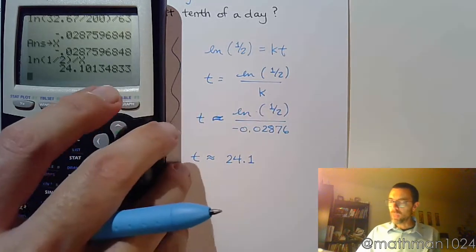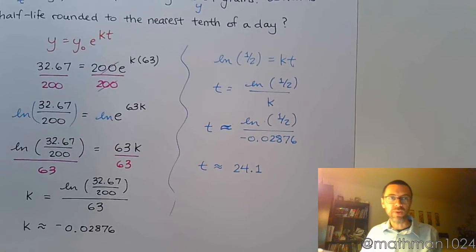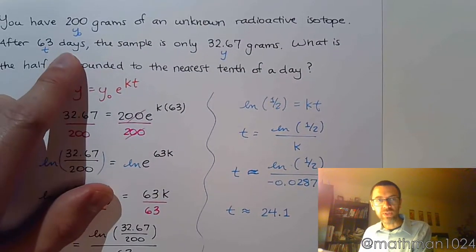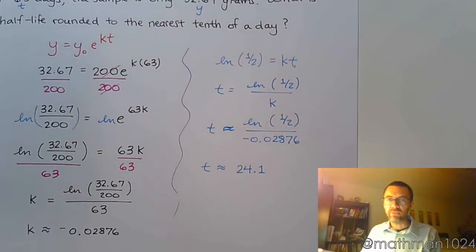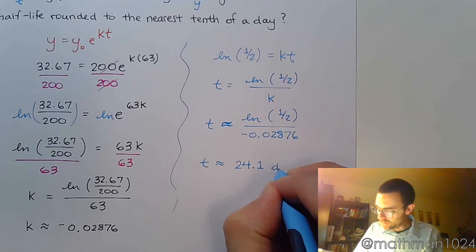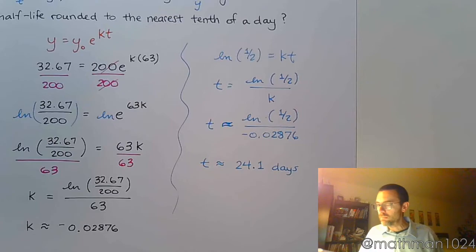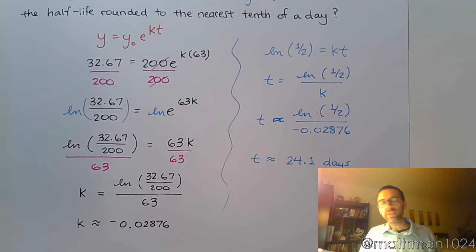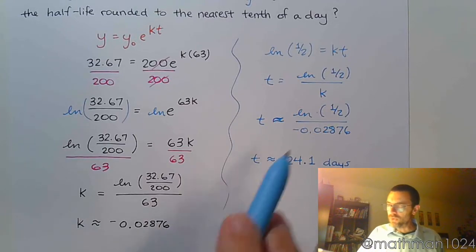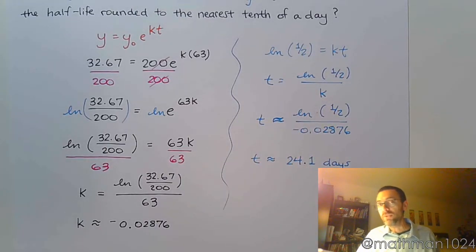What were our units? Well, we were talking about days, right? So after 63 days, so my half-life is 24.1 days. So there you go. We're going to take the initial values that they gave us, and we use that to find K. And once we found K, we use that with our formula to find our value for T, which was our half-life. Pretty nice. We'll be right back.